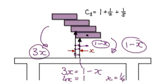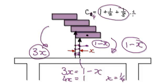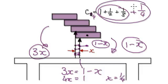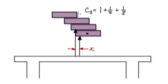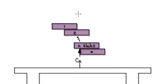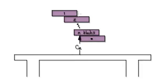So we should move the centre of gravity across by a quarter. Our C4 would be our old centre of gravity moved across by a quarter — so this would be our new centre of gravity for four blocks. Now let's look at the general case for n blocks. I will continue in the next video, where we will look at n blocks.